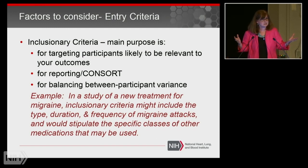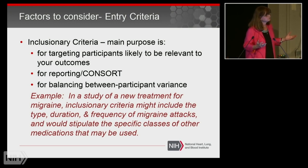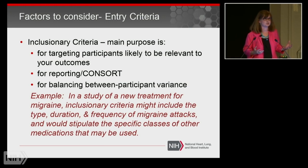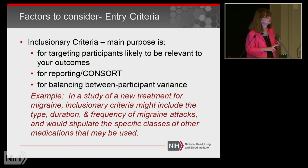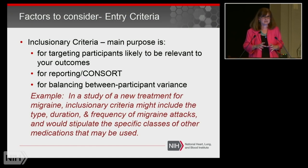An example: let's say you're doing a study of migraine and you have a new treatment. You'd identify the type of migraines, the duration that migraines in any individual participant occur for, and the frequency of those attacks. You'd also specify what other medications participants can use when they're enrolled in the study. Those are inclusionary criteria — you report out on them, and they target specific characteristics that are relevant.